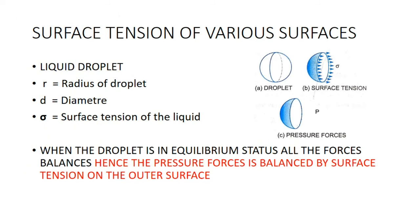Now we will estimate the surface tension force acting on different surfaces. First, we take the case of a liquid droplet — a spherical body with air inside, surrounded by a membrane of liquid. Consider a liquid droplet of radius r, diameter d, and surface tension sigma. When the droplet is in equilibrium, the surface tension force on the surface balances the pressure force inside the droplet due to the presence of air.